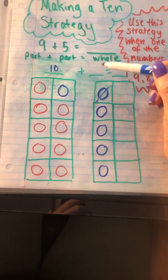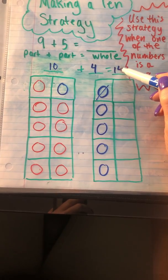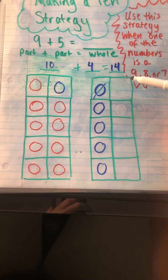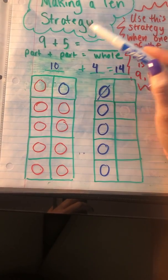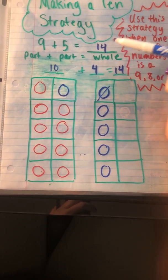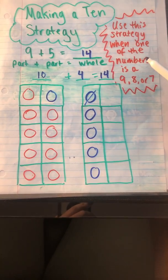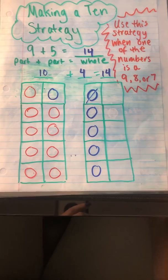Plus 4 equals 14. That's right. So 10 plus 4 equals 14. We now know is the same as 9 plus 5, which also equals 14. Let's look at another example. Again, we can use this strategy when one of the numbers is a 9, 8, or 7.